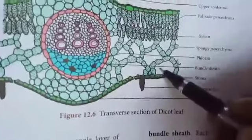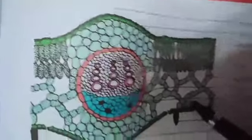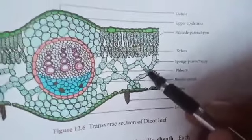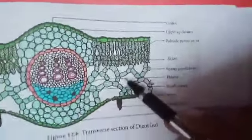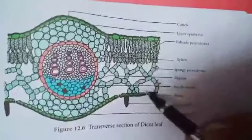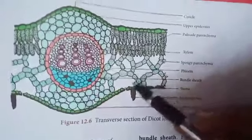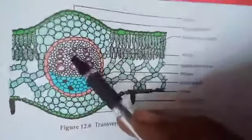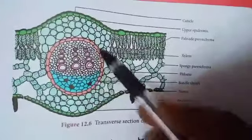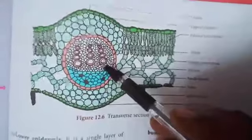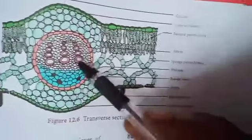Spongy parenchyma is found below the palisade parenchyma. The cells are almost spherical or oval in shape, irregularly arranged, with intercellular spaces. This helps in gaseous exchange. The vascular bundle in the midrib is larger; vascular bundles are conjoint, collateral, and closed.